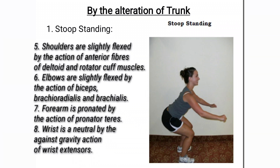Also, the shoulders are slightly flexed by the virtue of anterior fibers of deltoid and the other rotator cuff. The elbows are flexed by the action of biceps, brachioradialis and brachialis. The forearm is pronated by pronator teres and the wrist is in neutral against gravity by the action of the wrist extensors.